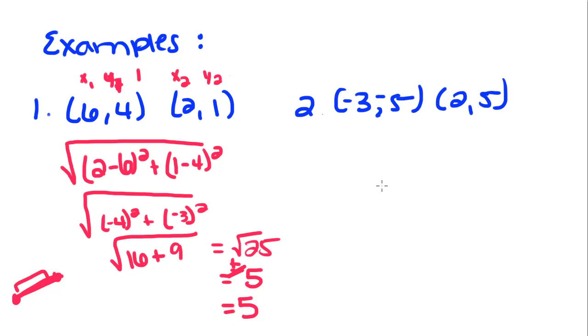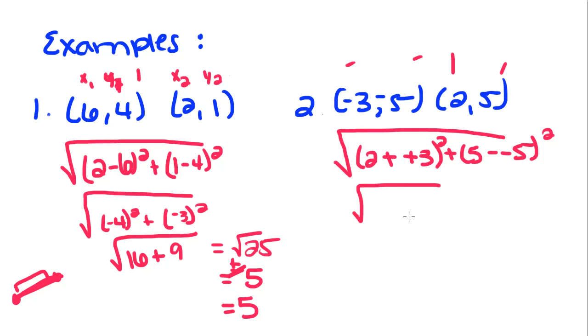It's pretty easy, but we're going to do some more examples just to be sure. We have the square root of (x2 minus x1) squared plus (y2 minus y1) squared. When you subtract a negative, you're really adding a positive. So 2 plus 3 is 6, and 6 squared is 36. Plus 5 minus a negative is plus 10 squared, which is 100.